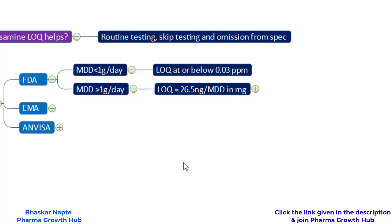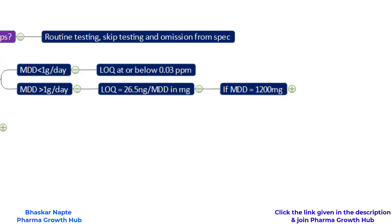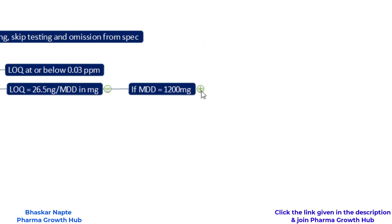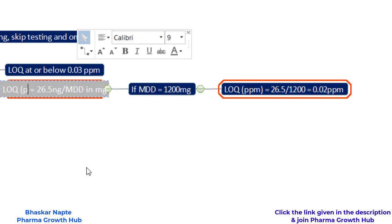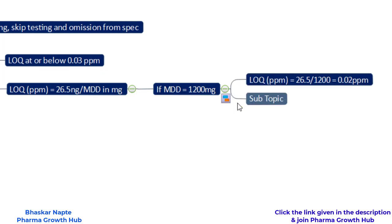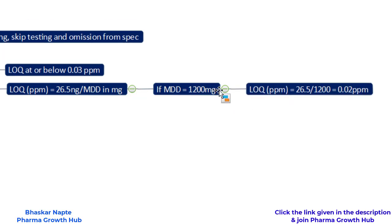As the maximum daily dose increases, the risk also increases, so FDA defined the LOQ requirement based on the most potent nitrosamine, NDMA, at 26.5 nanogram per day. Dividing by MDD gives the LOQ in ppm. For example, if the MDD is 1200 milligram per day: LOQ = 26.5 ng/day ÷ 1200 mg/day = 0.02 ppm. So your LOQ should be at or less than 0.02 ppm.